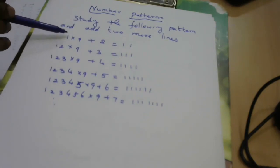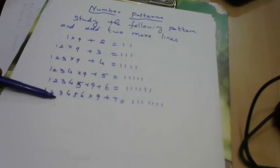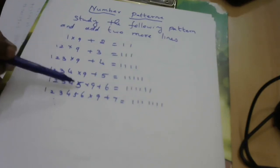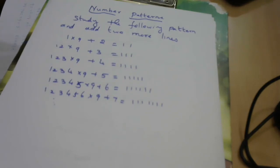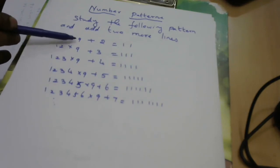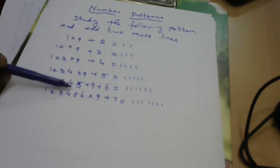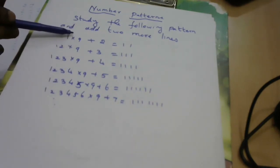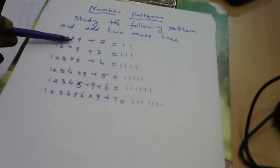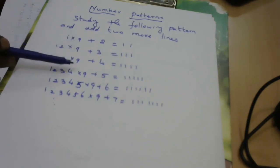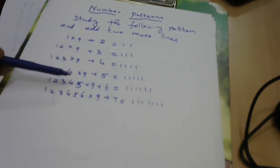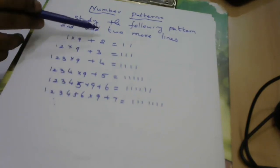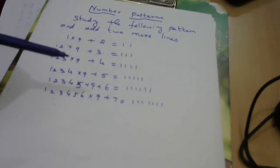Analyzing the pattern: the first numbers are 1, 12, 123, 1234, 12345, 123456 — growing in sequence. In all terms, the second number is multiplied by 9; that multiplication by 9 is common for all terms. After that, they add 2, 3, 4, 5, 6, 7 respectively. And the results are 2 ones, 3 ones, 4 ones, and so on.